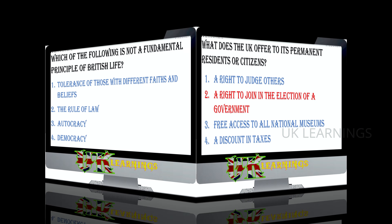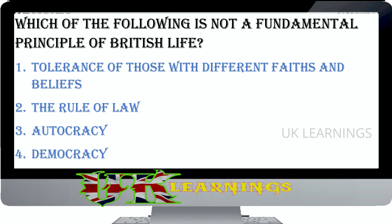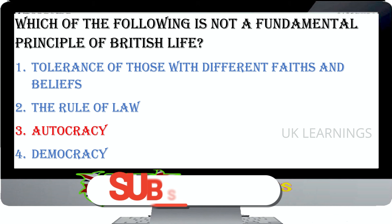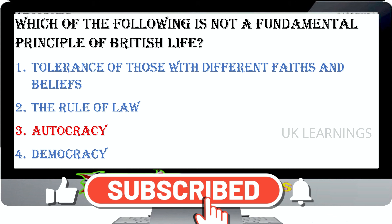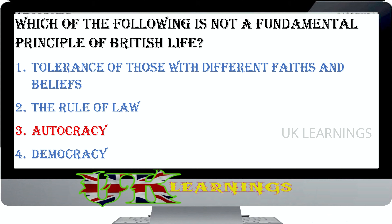Which of the following is not a fundamental principle of British life? Tolerance of those with different faiths and beliefs, the rule of law, autocracy, democracy. The correct answer is autocracy. The fundamental principles of British life include tolerance of those with different faiths and beliefs, the rule of law, democracy, individual liberty, and participation in community life.